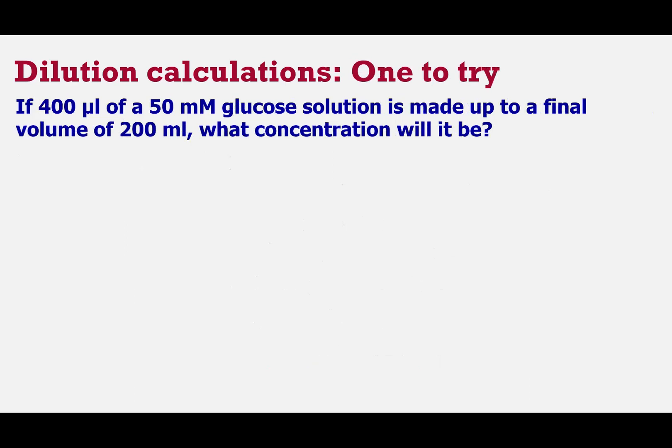So that's a fairly straightforward example. Here's one for you to try. Same sort of principles, if 400 microliters of a 50 millimolar glucose solution is made up to a final volume of 200 milliliters, what concentration will it be? So you might want to pause this video for a moment, work on that calculation, and then I'll work through the calculation for you in a moment.